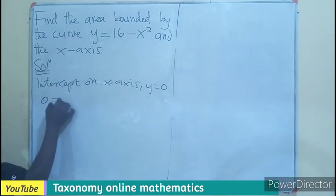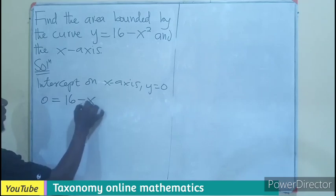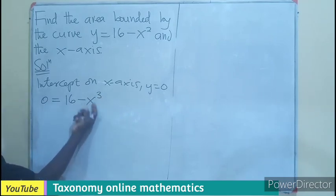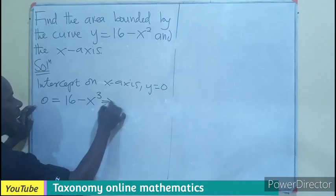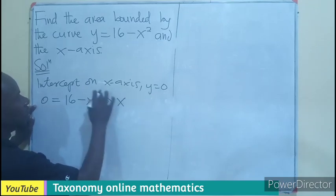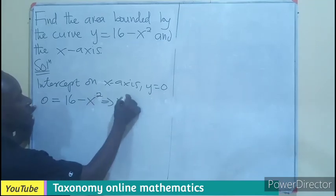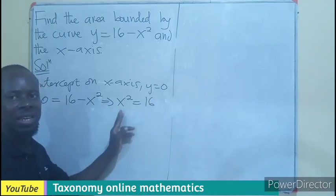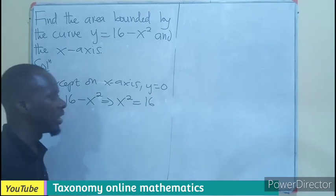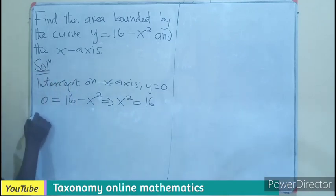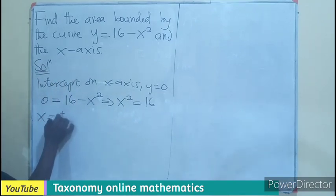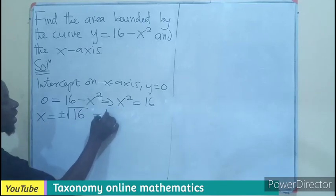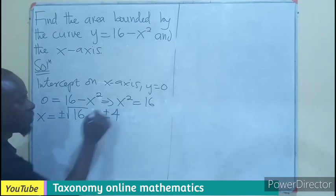We know this is negative. So when we cross, we will be having x squared equals to 16. So we need to find the value of x. We find the square root. So x is going to be equal to plus or minus square root of 16. And that will be plus or minus 4.